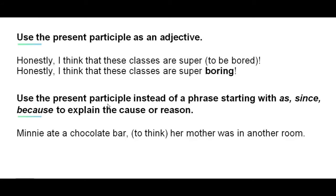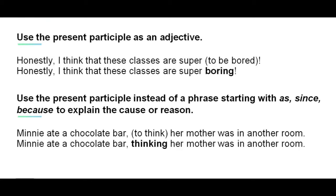We also use the present participle instead of a phrase starting with as, since, because to explain the cause or reason. Now read the following sentence and provide the present participle form of the verb in the bracket. Minnie ate a chocolate bar to think her mother was in another room. Minnie ate a chocolate bar thinking her mother was in another room.